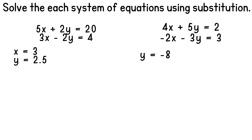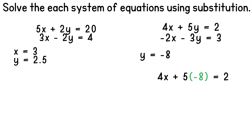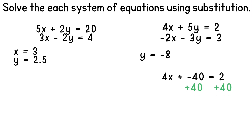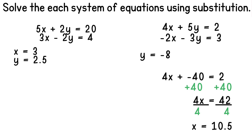Now that we know one solution, we can plug this into one of our equations to find the other variable. Substituting negative 8 for y gives us 4x plus 5 times negative 8 is equal to 2. Simplifying gives us 4x plus negative 40 equals 2. Adding 40 to both sides gives us 4x is equal to 42. Dividing both sides by 4 gives us x equals 10.5. Now we have the entire solution for this system.